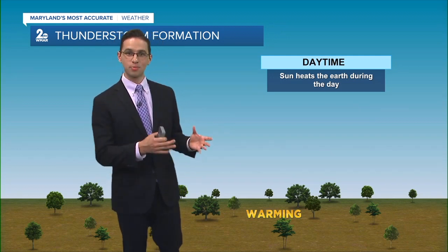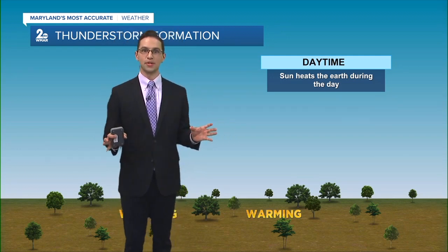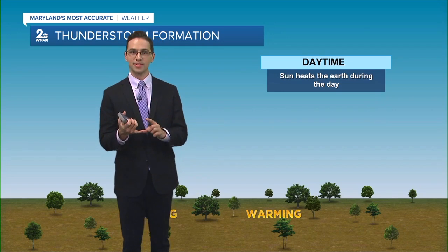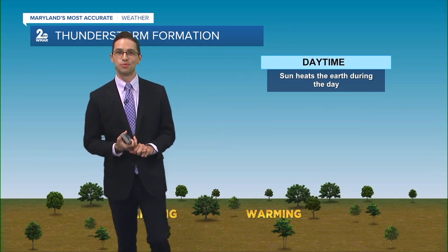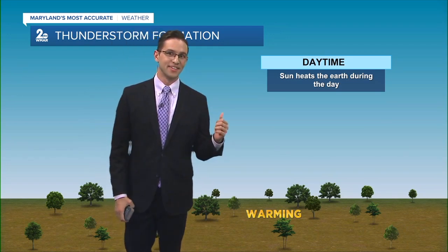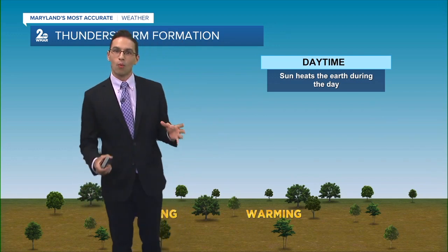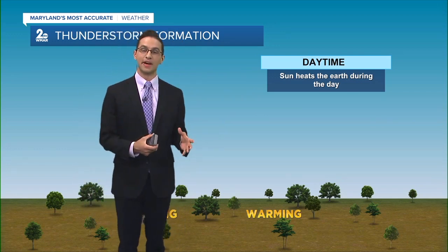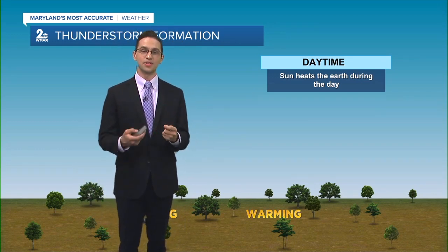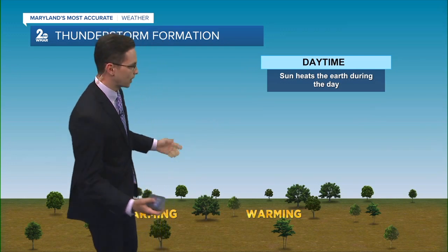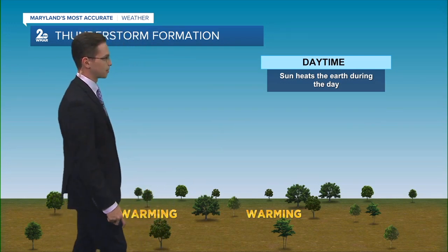As we transition from late spring into summer, there's some familiar sounds for you. Maybe it's crickets chirping, the ice cream truck, or crack of thunder. You ever heard that, looked up at a thunderstorm, and wondered how they develop? Well, here's a breakdown of how these thunderstorms get going this time of year and why they happen most prominently in spring and summer.